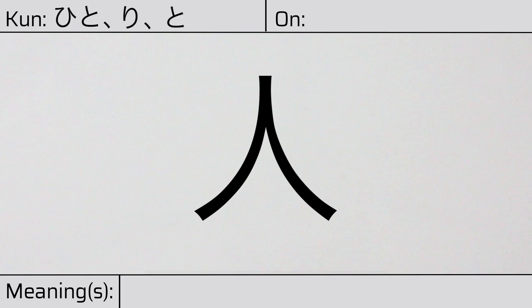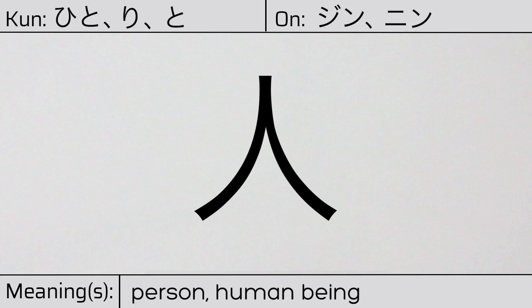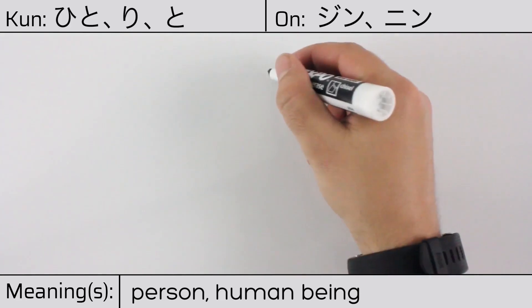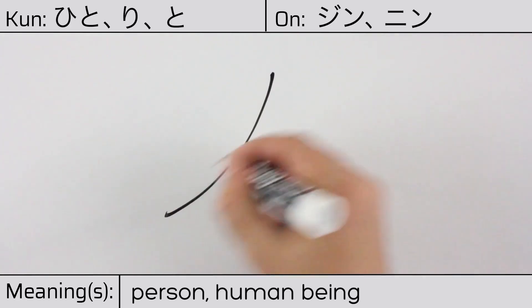And it has onyomi, or Chinese readings of jin or nin. This character has the meanings person or human being. Here is the stroke order: ichi, ni.